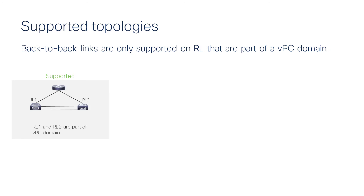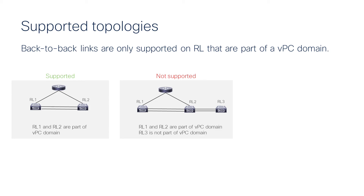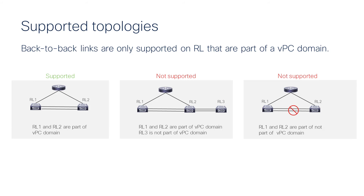The supported topologies are only with VPC. So you need to have the remote leaf as part of the VPC domain for this feature. What would not be supported is, for example, if there are two remote leaf that are part of the VPC domain but you connect another remote leaf — say remote leaf 3 — to RL2 or RL1 in a back-to-back connected fashion, that's not going to be supported. Or, if you have remote leaf 1 and remote leaf 2 and you have not configured them as part of the VPC domain, the back-to-back connected link will not come up and will not work.